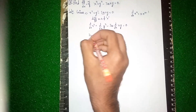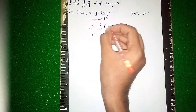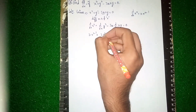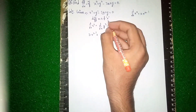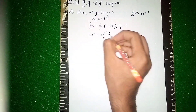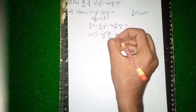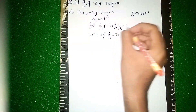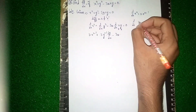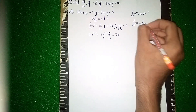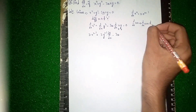Using the power rule d/dx of xⁿ = n·xⁿ⁻¹, it becomes 3x² plus 3y² · dy/dx. Now for the product term d/dx(xy), we use the product rule: d/dx(uv) = u · dv/dx + v · du/dx.